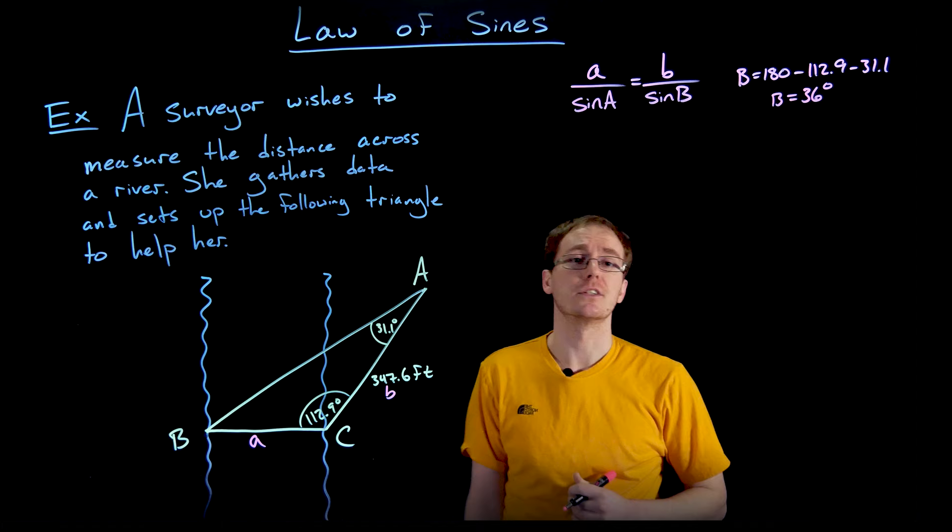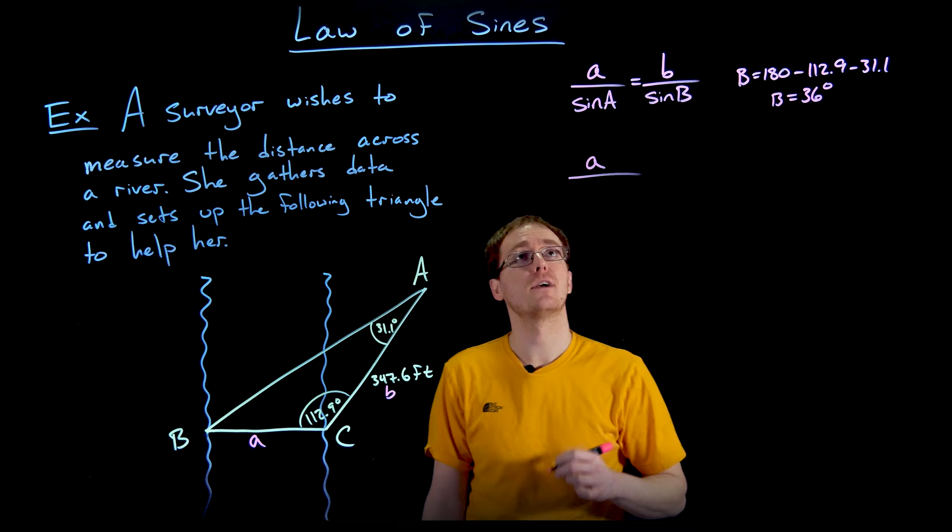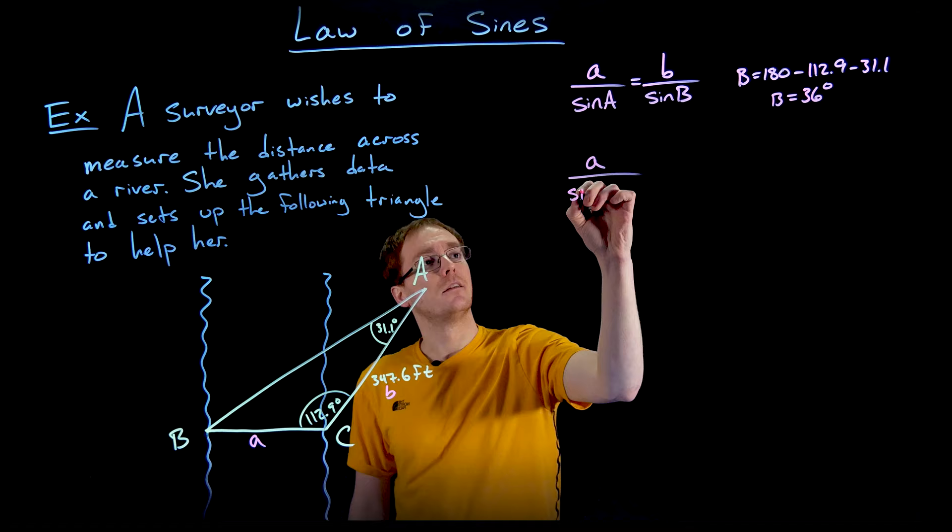With that in mind we are now ready to set up and plug everything into our law of sines formula. We're trying to find side length a, so that is our only unknown. We have to divide that by sine of our angle A. That's sine of 31.1 degrees.